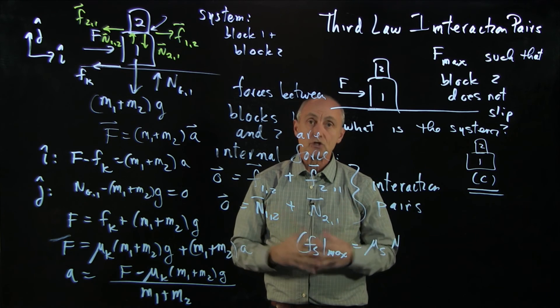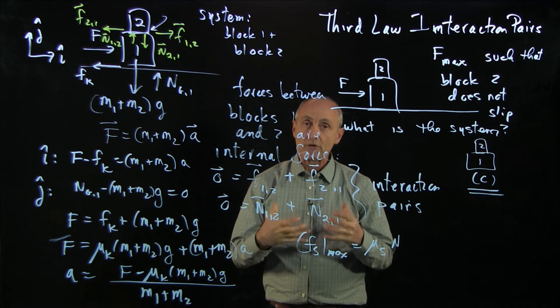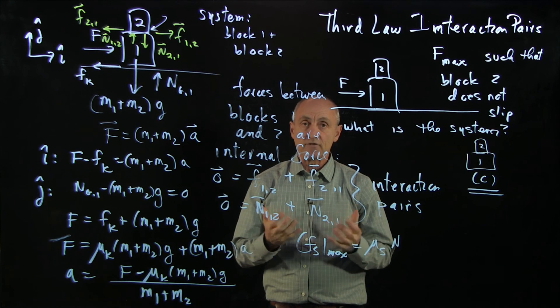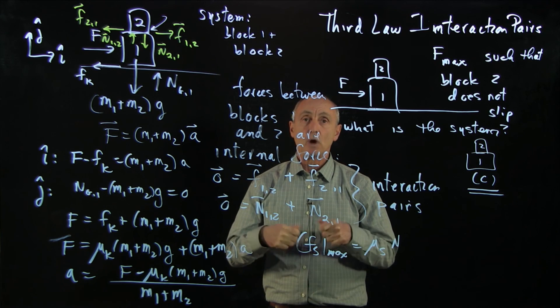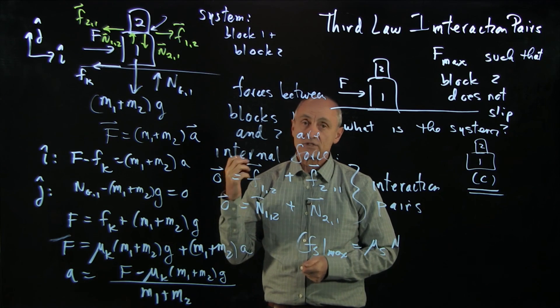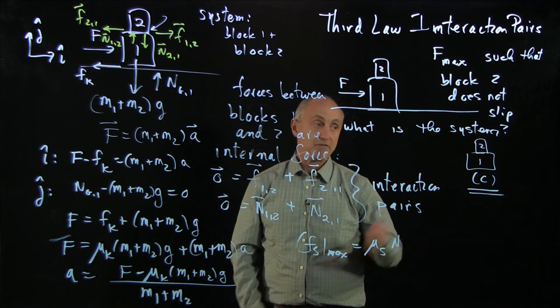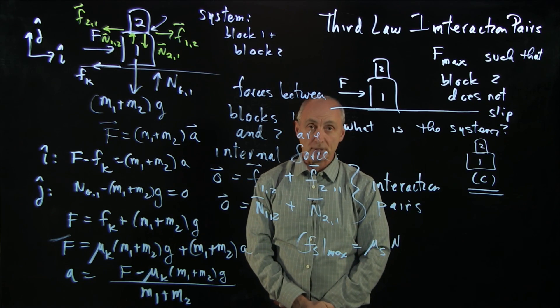So the art to choosing systems and free body diagrams is to think about the types of questions you're asking. If you have a question that involves something about a maximum condition on static friction, then you want to make sure that static friction is an external force to your system. If it's an internal force, like in this case, you will not be able to apply that condition.